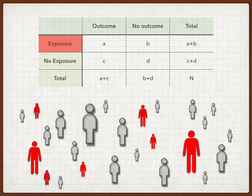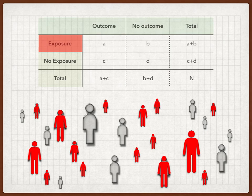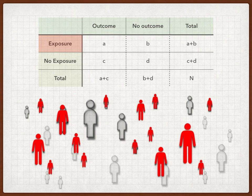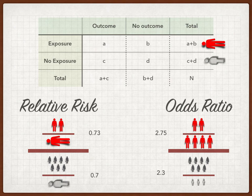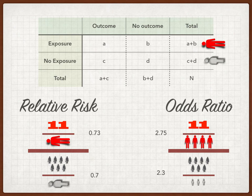Moving on to a different example, we're going to add a couple of exposures. Now we have a much higher incidence of exposures out of the same total, and we're going to throw these into different risk categories. There are 11 people with the outcome of choice out of the same total, yielding a risk of 0.73 in the exposed group and 0.7 in the not-exposed group. So you still have a relative risk of 1.